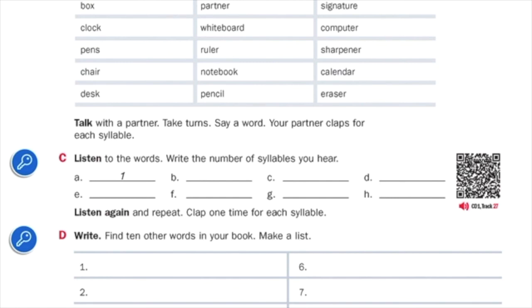Now, in Part D, find ten other words in your book. Write them down next to the numbers. And then practice saying the syllables while you clap. And figure out how many syllables in each word.